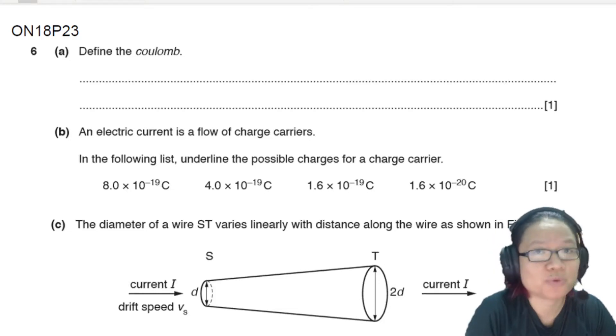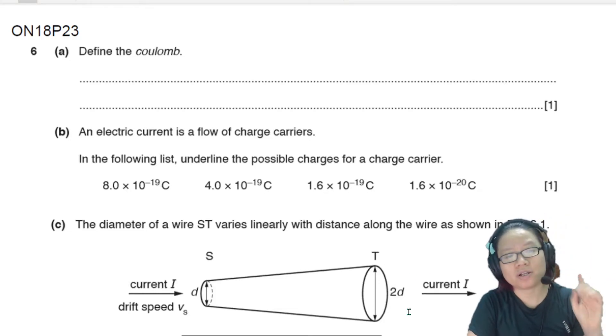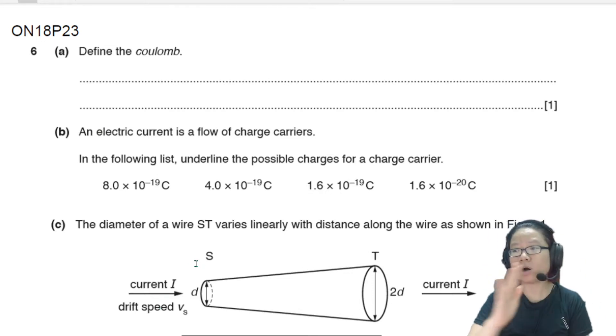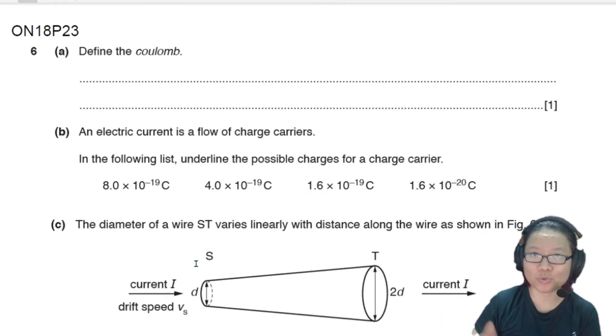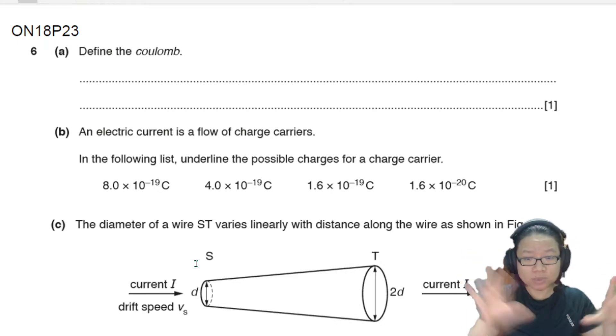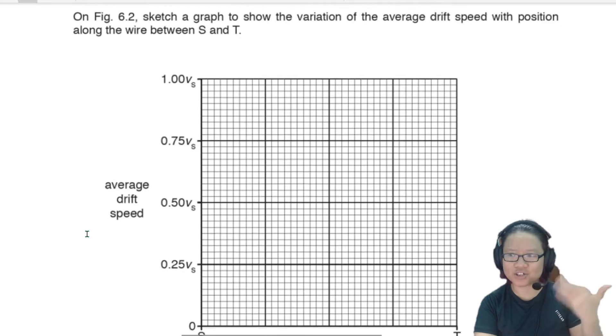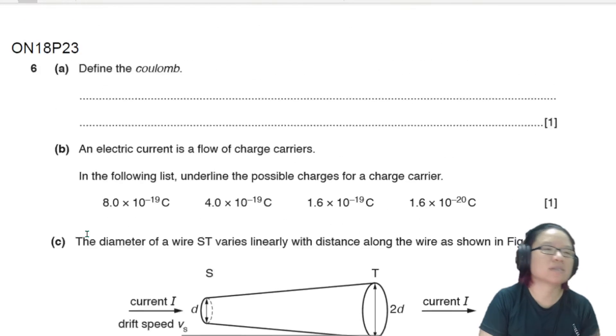Hello there. In this example, we are going to look at how the drift speed, drift velocity of current changes along the wire. You may have already watched those examples where we deal with ratio and calculating the ratio of the speed. This one, we're going to level up a bit. We're going to sketch a graph. But first let's answer part A.